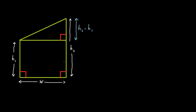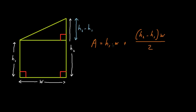Okay, so the area of this trapezium is h1 multiplied by w, plus h2 minus h1 multiplied by w divided by 2. Now, h1 multiplied by w is the area of this rectangle here. h2 minus h1 multiplied by w divided by 2 is the area of this right angled triangle here.